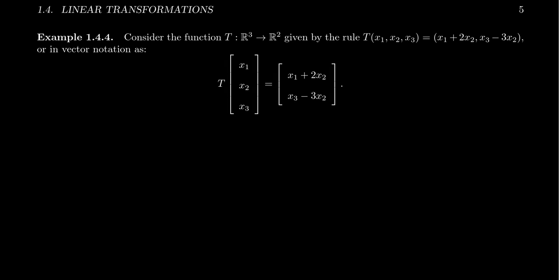In a previous video, we introduced the following linear transformation, T from R³ to R², given by the following rule: T(x₁, x₂, x₃) is equal to x₁ + 2x₂ in the first entry, x₃ - 3x₂ in the second entry. We've shown that this is a linear transformation.